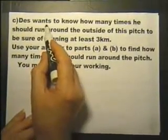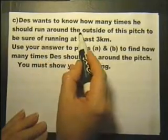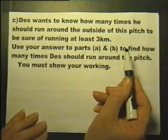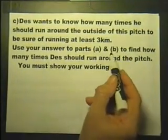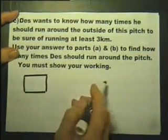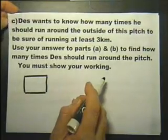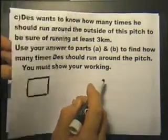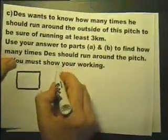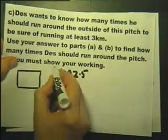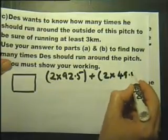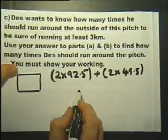Now someone called Des wants to know how many times he should run around the outside of this pitch to be sure of running at least 3 kilometres. So if we use our answers to part A and B, let's see how far it is around the outside of the pitch. Now it would mean to say that the shortest distance around the outside of the pitch is going to be 2 of that plus 2 of that.